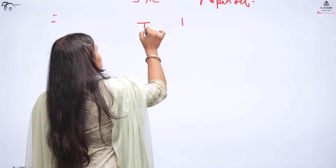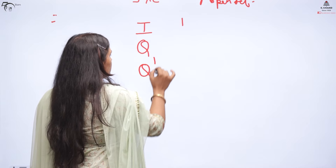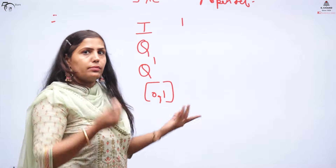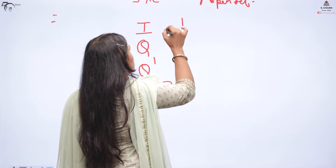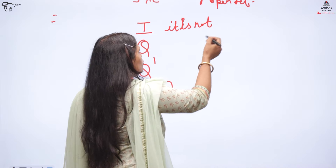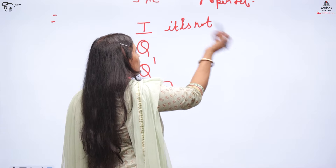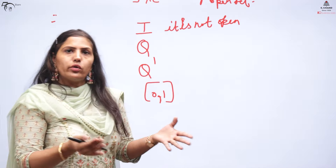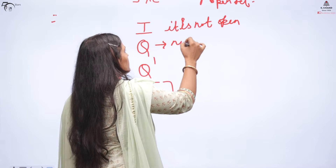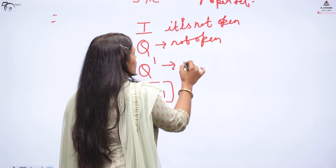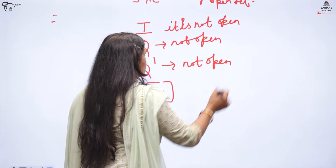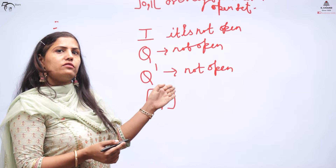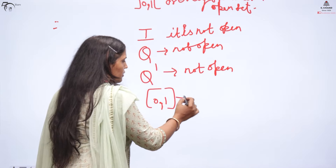Examples of sets that are not open: the set of integers Z — we showed it is not a neighborhood of any of its points, so it is not open. Q is also not open, for the same reason. The closed interval [0,1] is not open either, because at the boundary points 0 and 1, the left and right portions respectively fall outside the set.